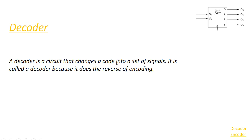In digital electronics, a decoder can take the form of a multiple input and multiple output logic circuit that converts coded input into coded output. A decoder is a circuit that changes a code into a set of signals. It is called a decoder because it does the reverse of encoding.